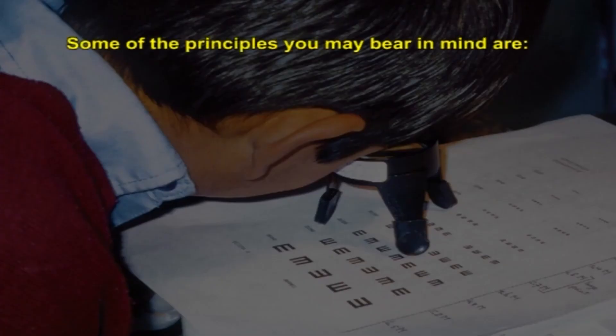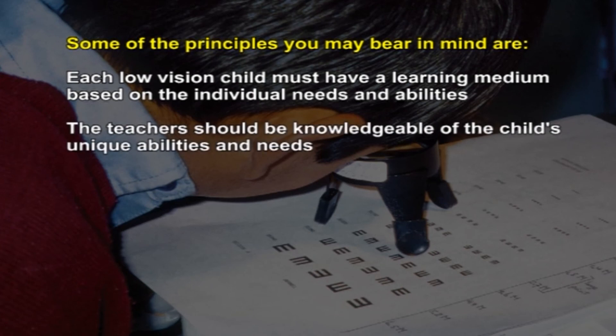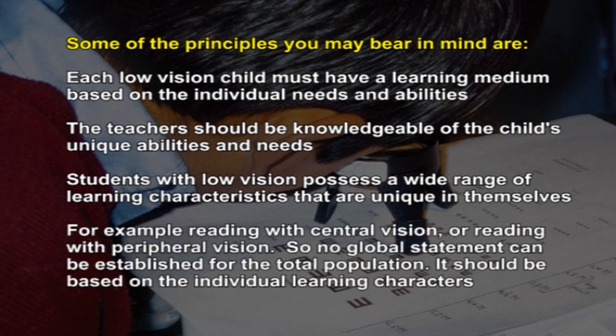Some principles to bear in mind: each low vision child must have a learning medium based on individual needs and abilities, and the teacher should be knowledgeable of the child's unique abilities and needs. Students with low vision possess a wide range of unique learning characteristics — for example, reading with central vision or reading with peripheral vision — so no global statement can be established for the total population; it should be based on individual learning characteristics.